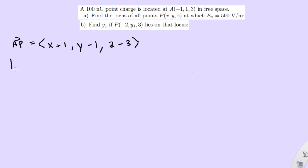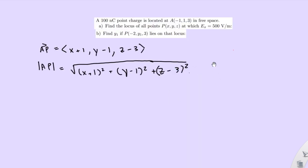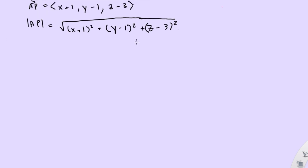Okay, so find the magnitude. That's just the square root of these three: x plus 1 squared, y minus 1 squared, z minus 3 squared. Okay. Let me zoom out a little bit to remove some space. Okay, so now we can find the electric field.